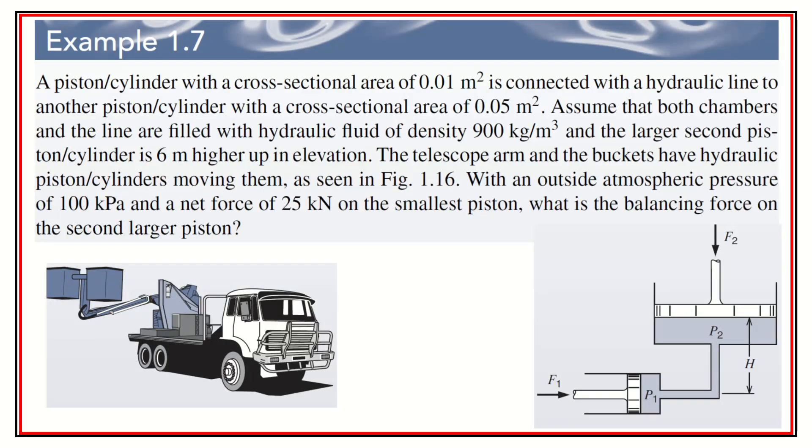A piston/cylinder with a cross-sectional area of 0.01, this guy, 0.01, is connected with a hydraulic line, that's this guy right here, to another piston cylinder with a cross-sectional area of 0.05 square meters. So this one must be this one, and this one must be this one right here.